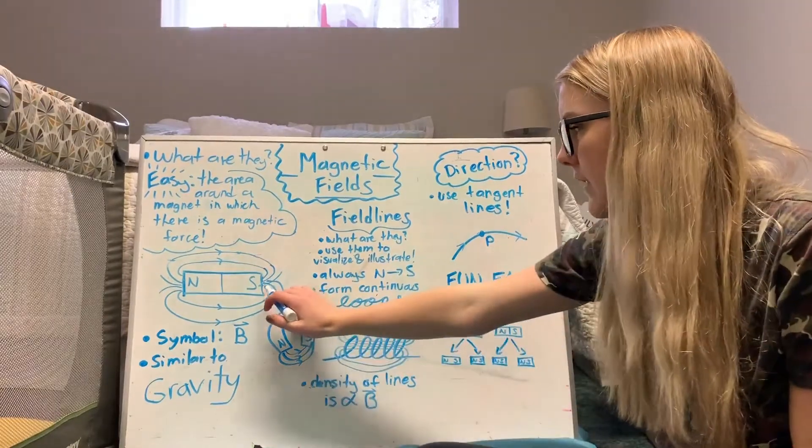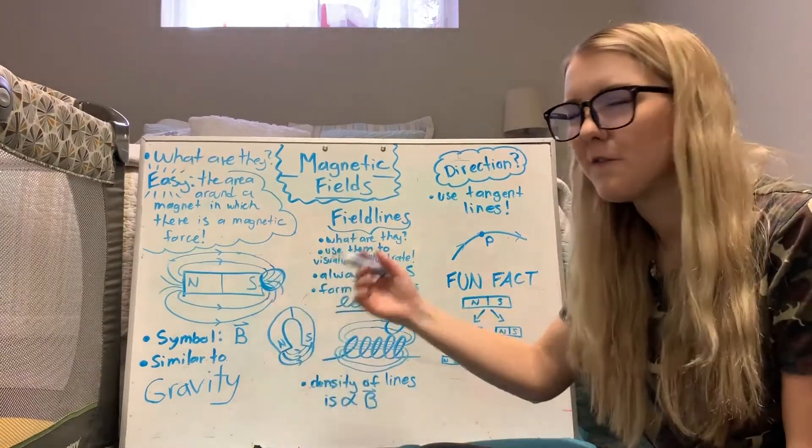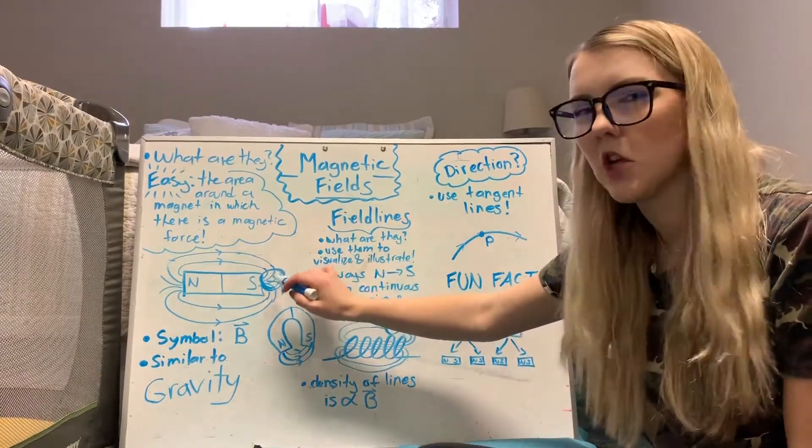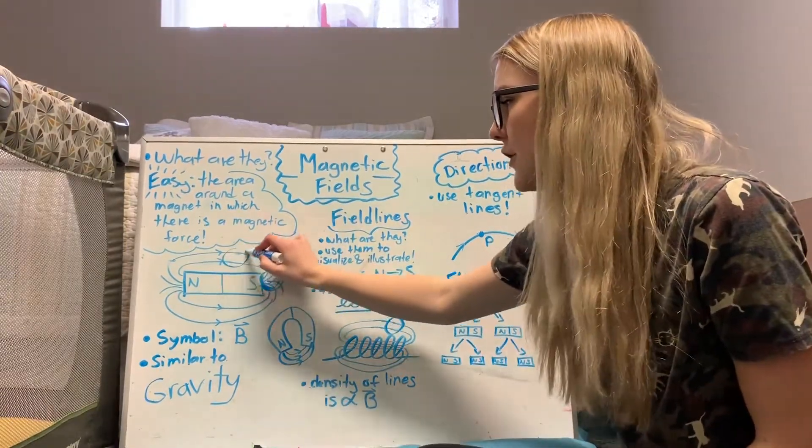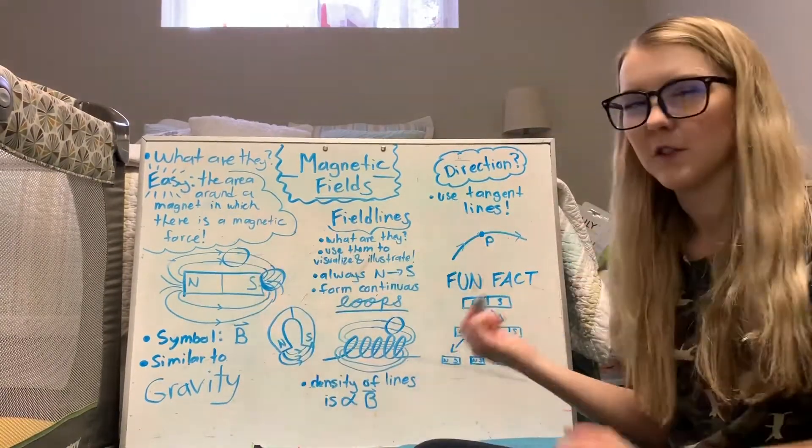Similar to this bar magnet, right here it's going to have a lot stronger of a field at this point. Field's going to be a lot stronger than if it was out here where there's less lines. So that's another important thing if you need to know where the field's the strongest.